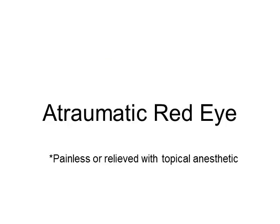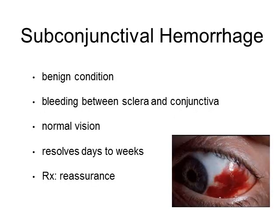Let's start with atraumatic red eye that is painless or relieved with topical anesthetic. Subconjunctival hemorrhage is a simple non-dangerous condition — bleeding between the sclera and the conjunctiva. It can occur due to straining, coughing, or Valsalva. The patient will usually have normal vision and it resolves over days to weeks. Treatment is reassurance; these people can continue their wilderness trip.